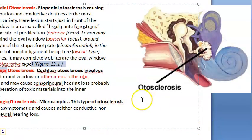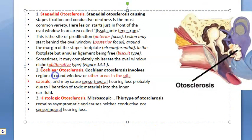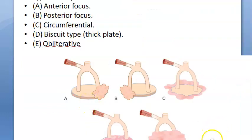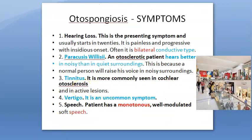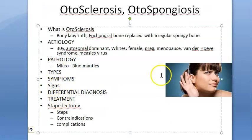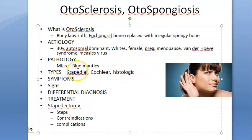Other than stapedial, there is cochlear otosclerosis, which involves the round window and other areas of the otic capsule rather than the oval window. There is also histological otosclerosis, where only the histology is affected and the patient is asymptomatic. So the three main types are stapedial, cochlear, and histological.